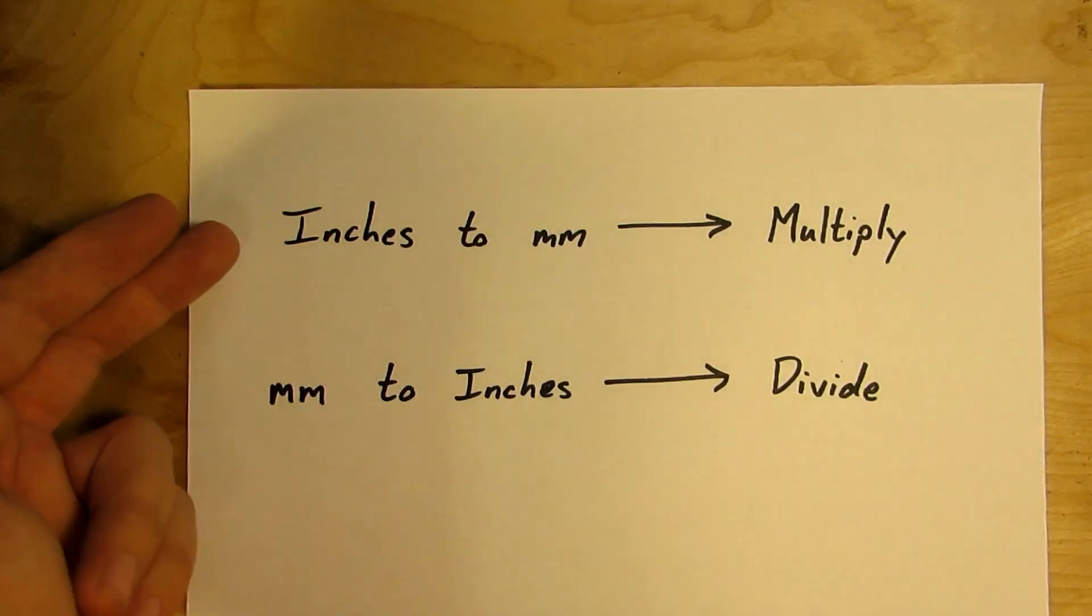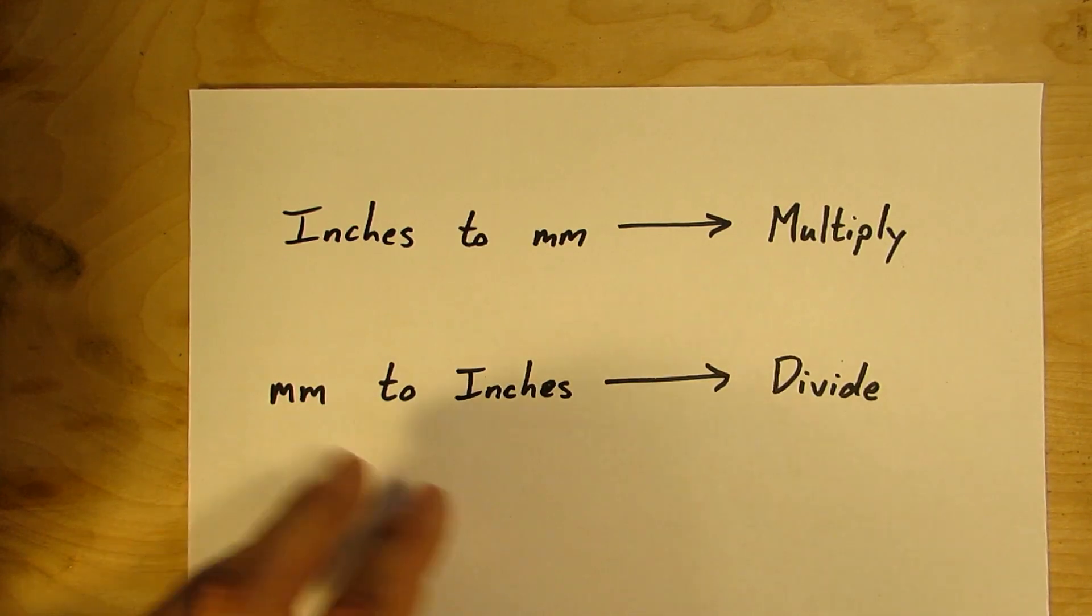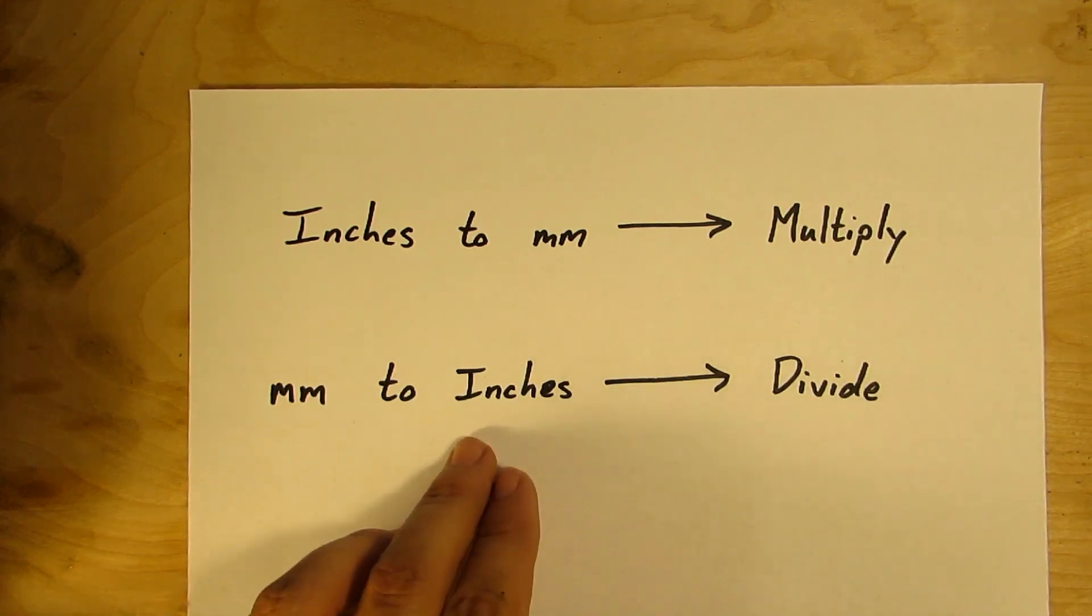So in this case you would take your inches and you would multiply it by 25.4 to get your millimeters, and you would take your millimeters and divide it by 25.4 to get your inches.